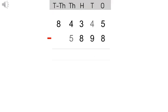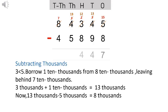Subtracting the thousands column: three is less than five, so it needs to borrow one ten thousand from eight ten thousands, leaving behind seven ten thousands. Three thousands plus one ten thousand equals thirteen thousands. Thirteen thousands minus five thousands equals eight thousands. Write eight in the thousands column.